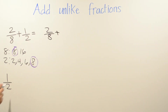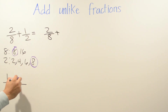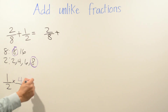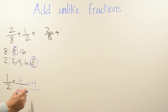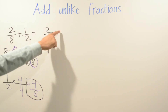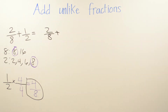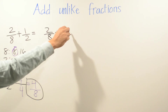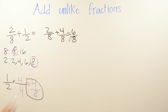The only fraction we need to change is one-half. How many times do we multiply 2 to get to 8? One, two, three, four — so we multiply by 4. Whatever we do on the top we also do on the bottom. So 1 times 4 is 4, and 2 times 4 is 8. One-half becomes four-eighths.